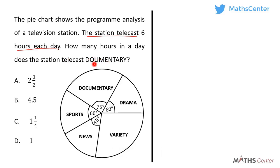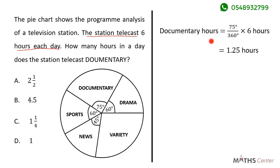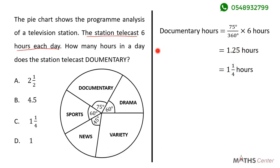The number of hours dedicated to documentary equals the angle of the sector for documentary which is 75 degrees, divided by the total angles in a circle which is 360 degrees, times the total number of hours which is 6 hours. 75 divided by 360 times 6 gives us 1.25 hours, which is 1 and one quarter hours. When we look through the options the correct option is C.